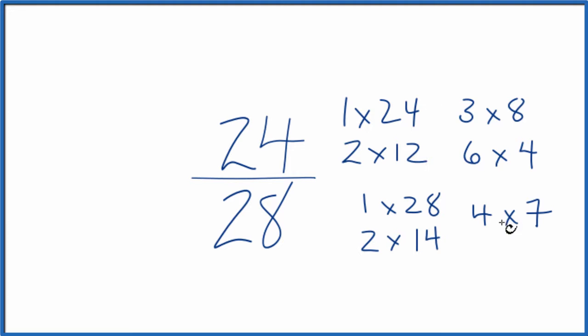So these are the factors of 24 and 28. We're looking for the greatest common factor. Looks like 4, that's going to be the greatest common factor.